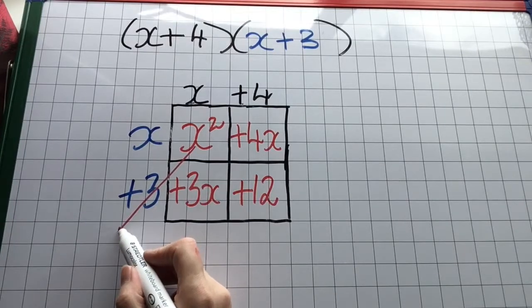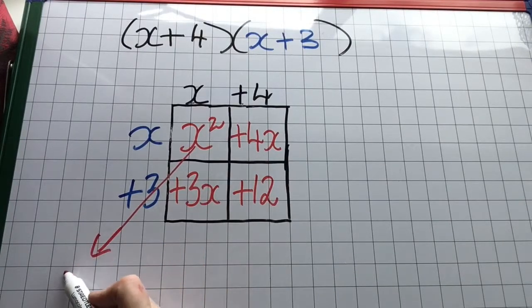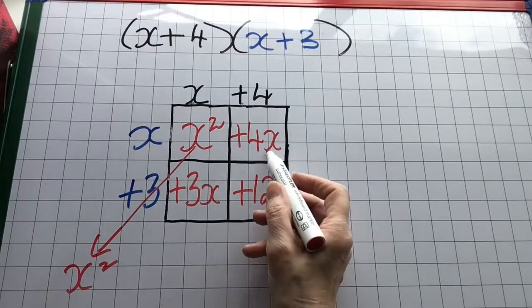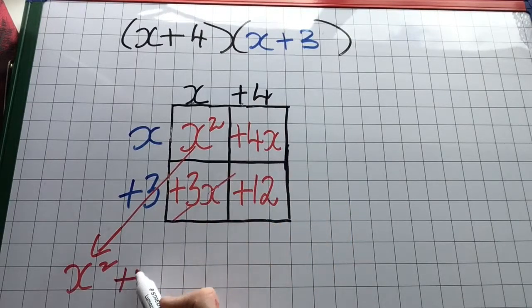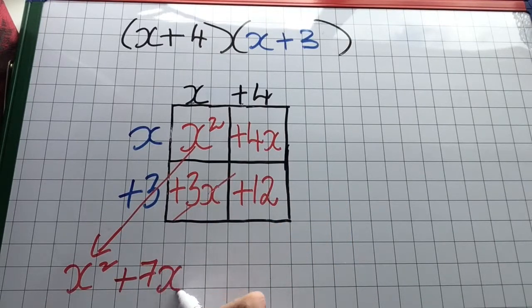Now I've removed the brackets. I'm going to simplify. That means add up like terms with like. So I get x squared, adding along the diagonals, plus 7x plus 12.